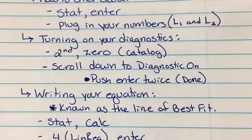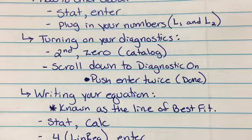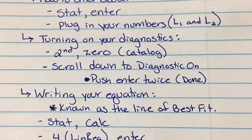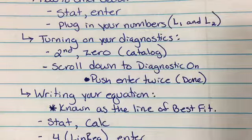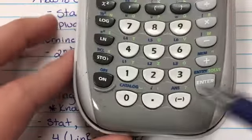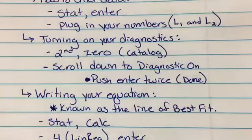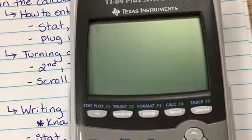Before you do that, you have to turn on your diagnostics. You're going to want to push second and zero, because that's where the catalog is. We need to go to the catalog. So you push second zero and you're going to have this screen, the catalog.